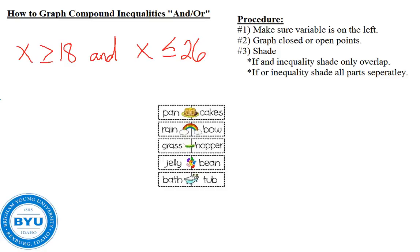A compound inequality is just like a compound word. We have pancakes, rainbow, grasshopper, jelly bean, bathtub. Those are compound words and we're going to be dealing with compound inequalities. In other words, we're going to have two inequalities and we're going to make them work together, just like these compound words. We have two words and we make them work together.